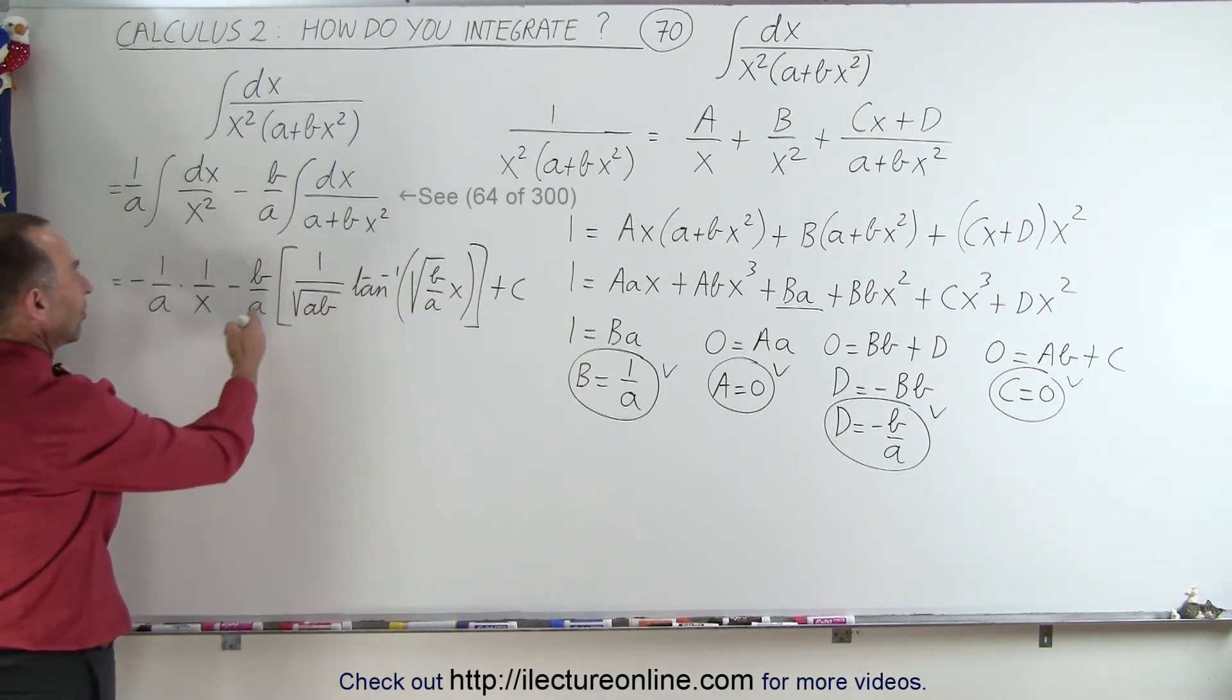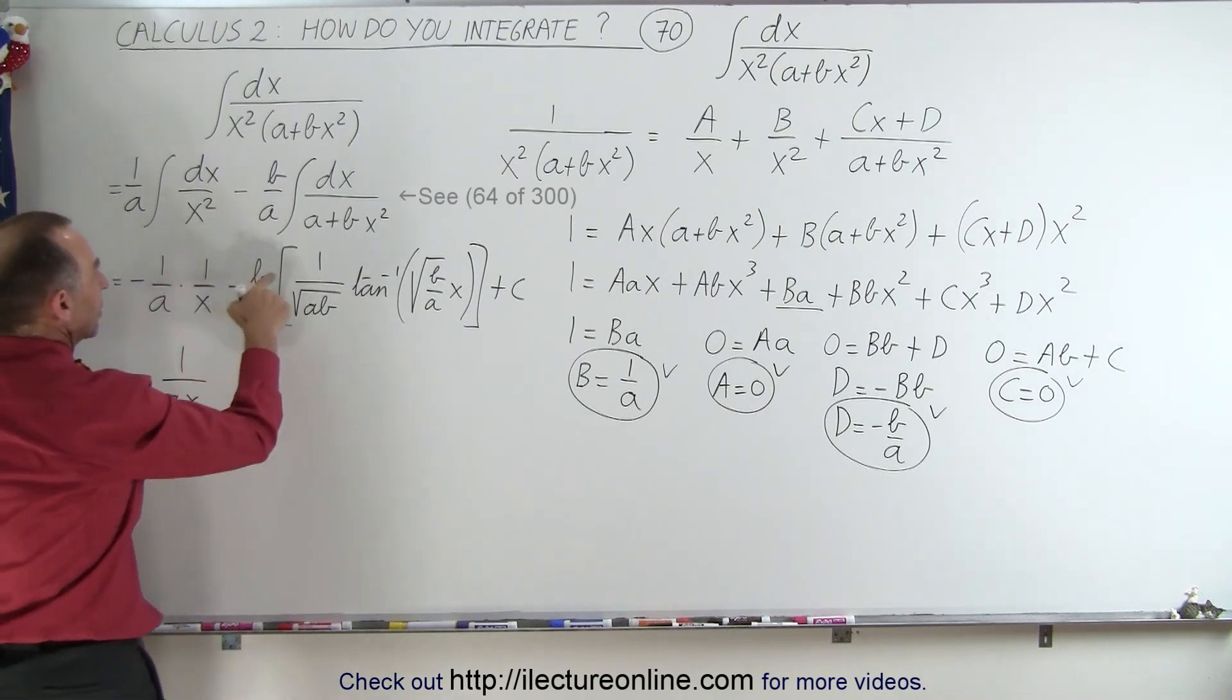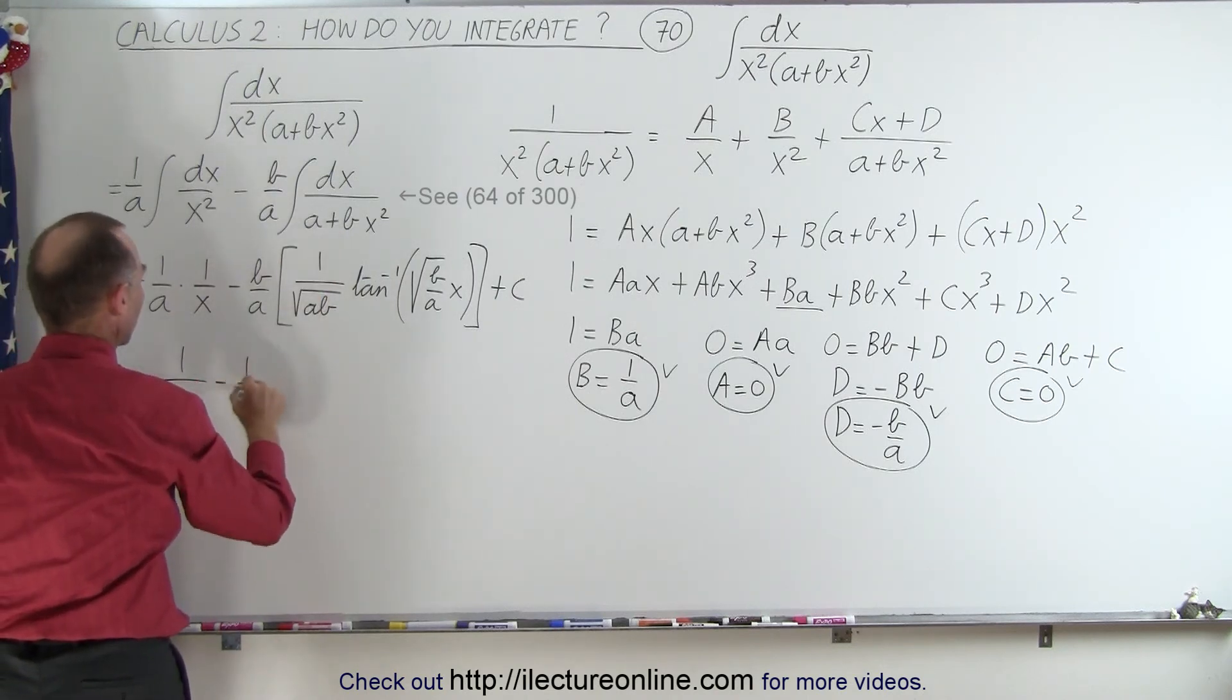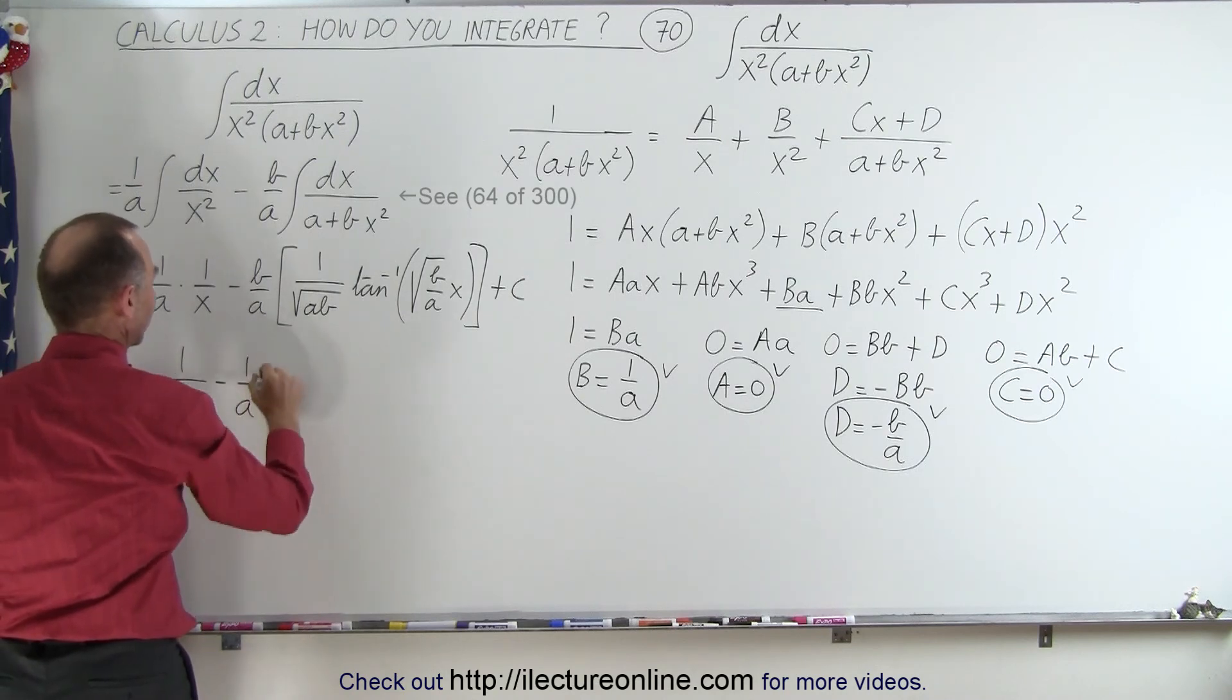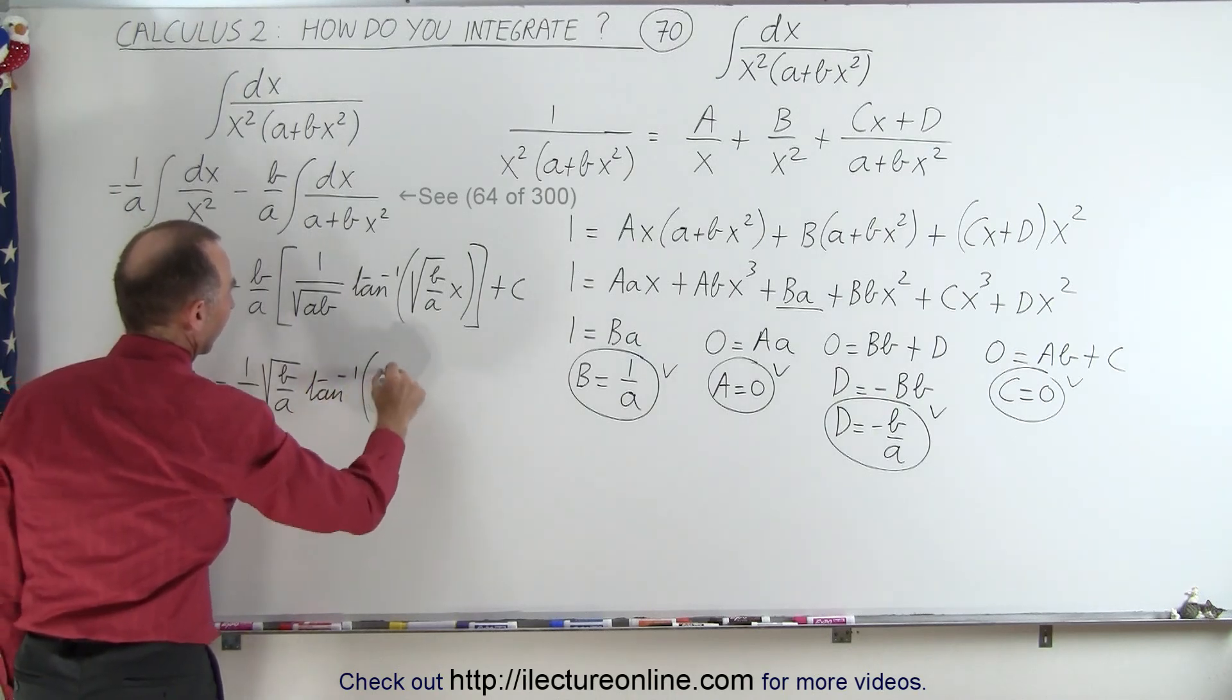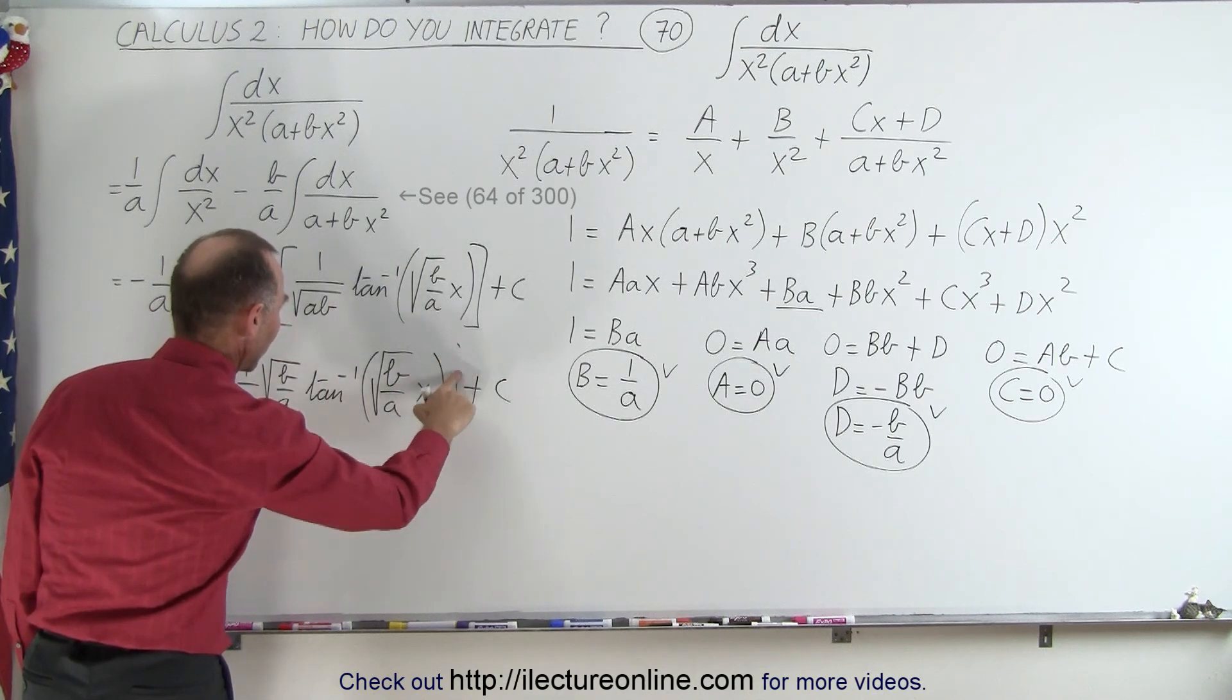And of course, we could simplify this a little bit more. So this could be written as minus 1 over ax. And here, that would be equal to minus 1 over a times the square root of B over a times the inverse tangent plus the constant of integration.